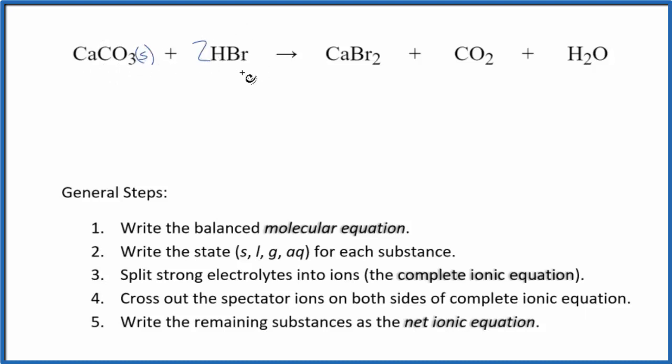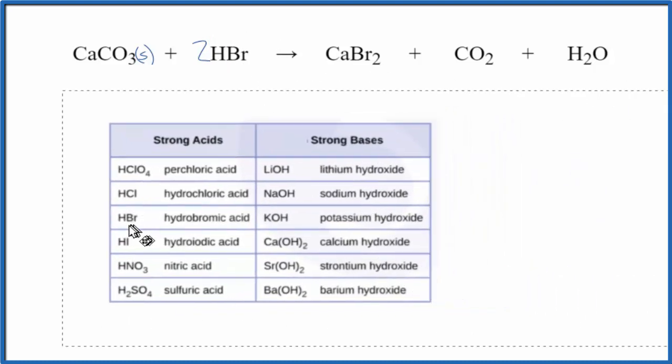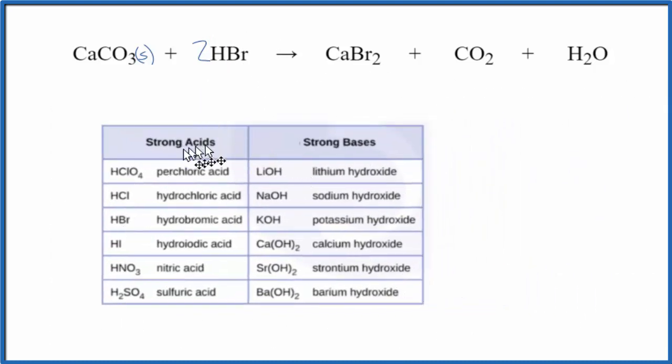We're going to assume that our HBr is aqueous, it's in water, and because it's hydrobromic acid, we can see here we have a list of strong acids and strong bases. Hydrobromic acid is considered a strong acid. Because of that, it's going to dissociate into its ions. It's going to be aqueous. So we'll write AQ after that.